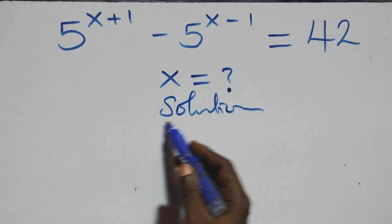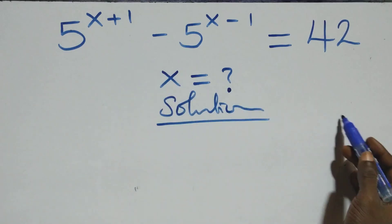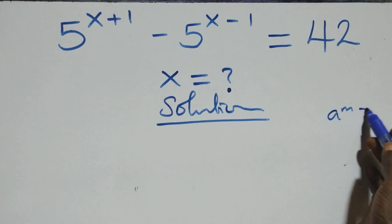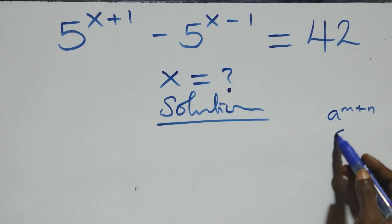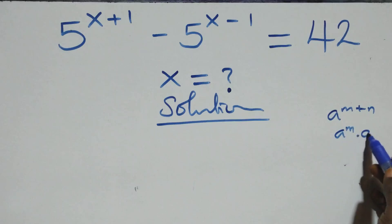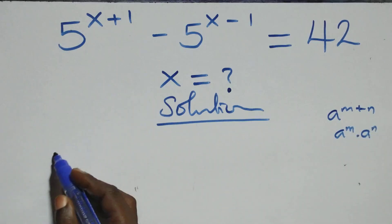What we have here: in the following zone we have a raised to power n plus n, which is the same thing as a raised to power n times a raised to power n.